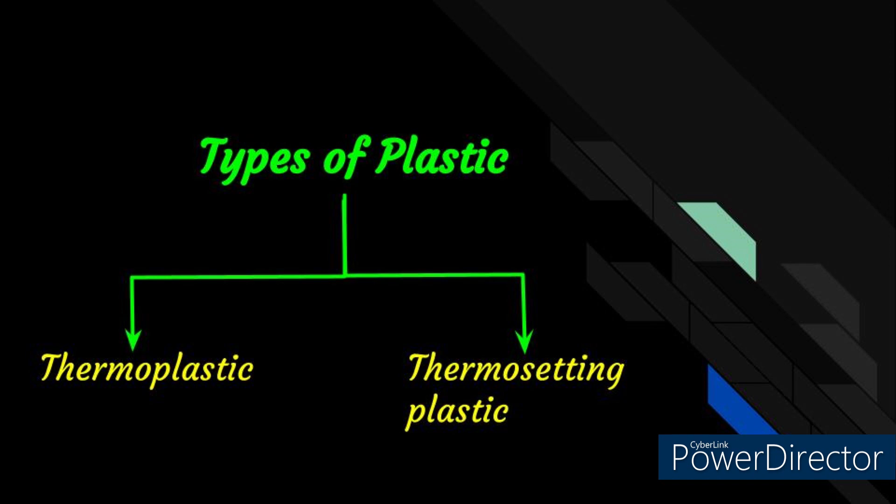Types of Plastic: The most important classification of plastic is based on the effect of heat. So plastics are of two types — thermoplastic and thermosetting plastic.